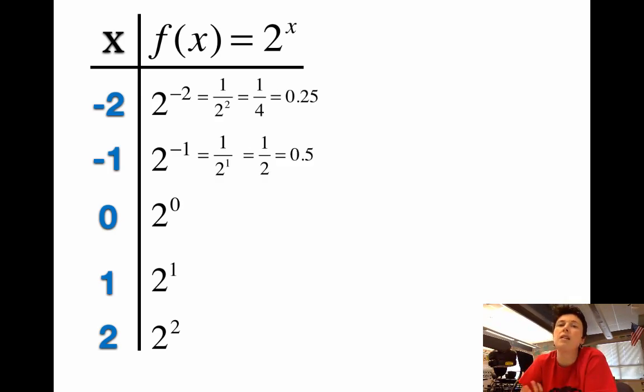Now, if you want, you can make them into a decimal. That's kind of up to you. 1 fourth, we know, is 0.25. 1 half is 0.5. And that's okay to do. 2 to the 0, anything to the 0 power is equal to 1. 2 to the 1st is 2. 2 squared is 4. So there's our table.